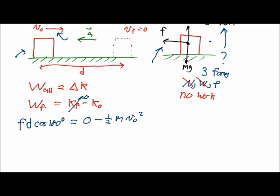Alright, so the cosine of 180 is equal to minus one, so we'll have minus f times d is equal to minus one half m v original squared.